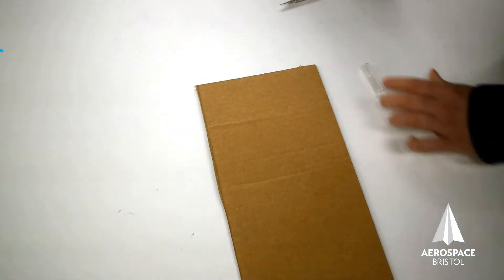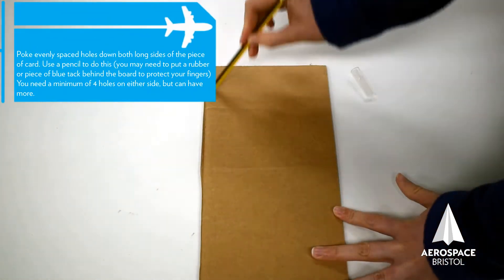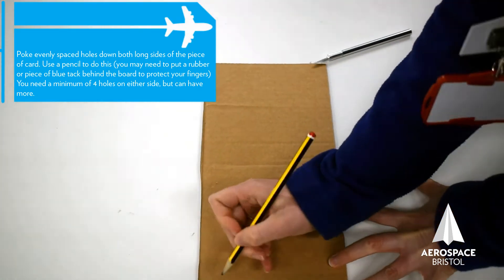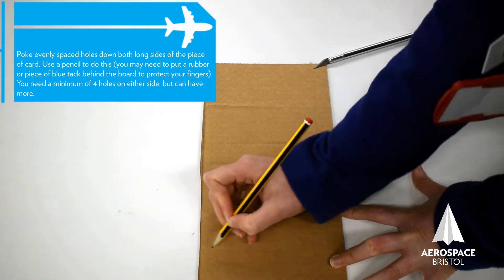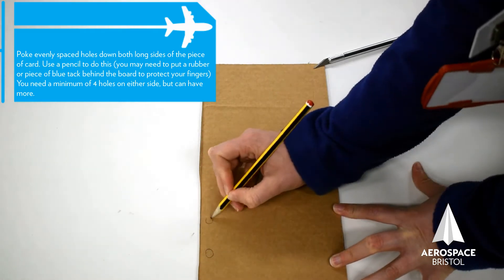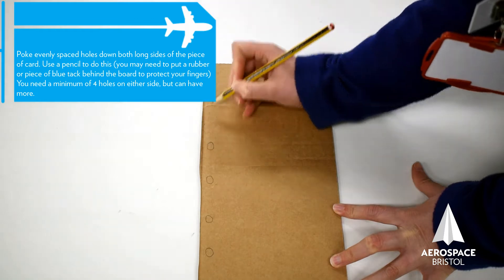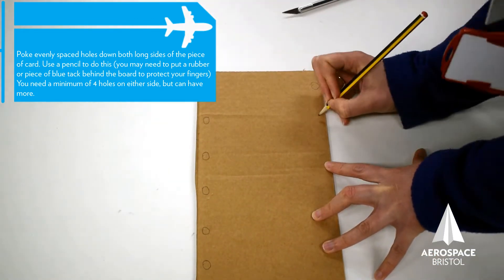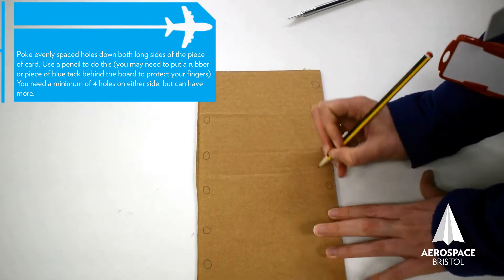Now I need to make holes down the long sides of my cardboard. I need at least four holes. I think I'm going to do seven. They need to be equally spaced on both sides, or close enough to that.